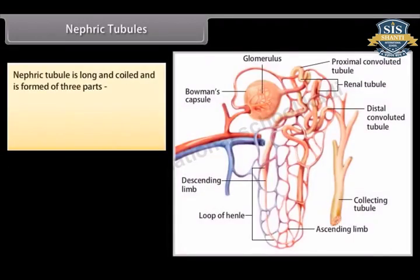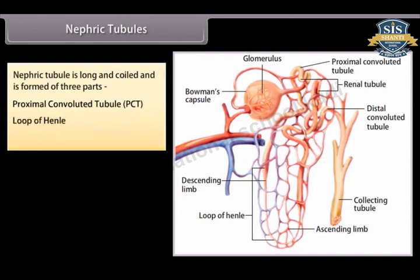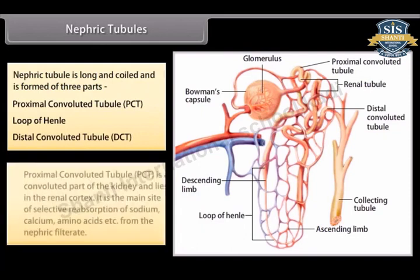The nephric tubule is long, coiled, and formed of three parts: the proximal convoluted tubule (PCT), the loop of Henle, and the distal convoluted tubule (DCT). The PCT is a convoluted part lying in the renal cortex, and is the main site of selective reabsorption of sodium, calcium, amino acids, etc., from the nephric filtrate.